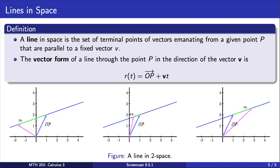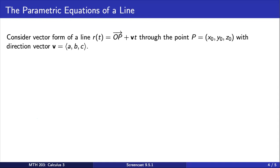We now wish to look at an alternate way to define a line in space. Consider the vector form of a line, r(t), in three space, through the point P with coordinates x-naught, y-naught, and z-naught, with direction vector V that has components a, b, and c.